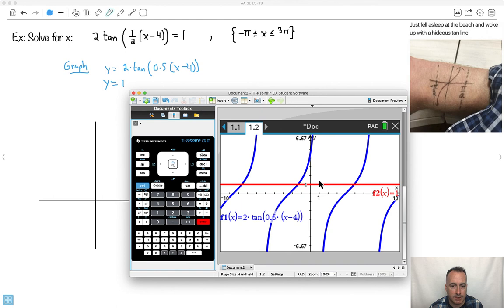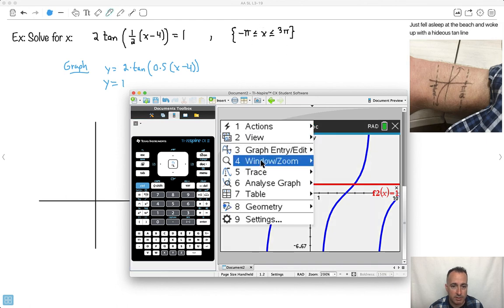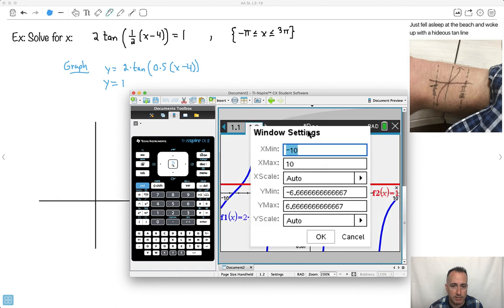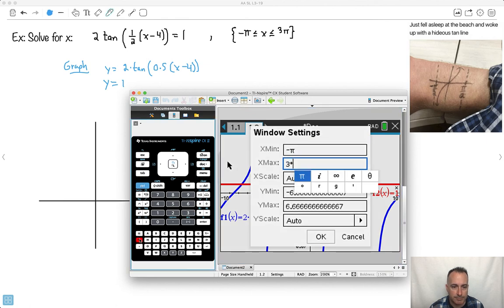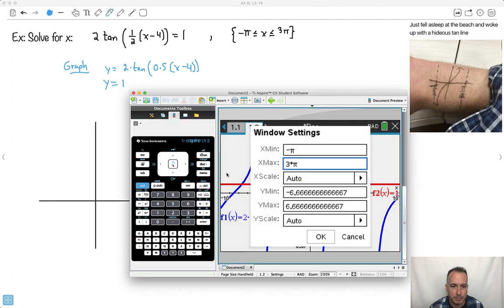So here it intersects a lot of times. In fact, it intersects infinite number of times because tan repeats. So now we've got to think about where are our limitations, from minus pi to 3 pi. So let me put that in as my window. So I'll say window settings. I'll go from minus pi. I like how you can actually type in that, that's actually pretty awesome. To 3 times pi. Tab. And let's just go. Let's see what it looks like.